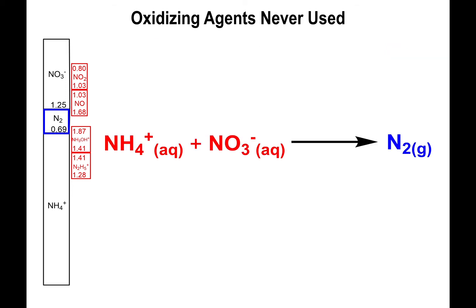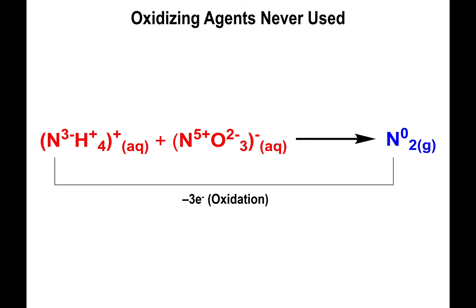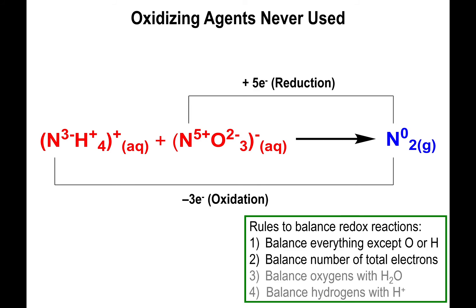We're going to use the same rules as before for these comproportionation reactions. We look at the charges of the individual species. Nitrogen has a three-minus charge in the first reactant and a five-plus charge on the second reactant. Subtracting from zero, that gives minus three electrons for the first and five electrons for the second — and this is per nitrogen center. We have one nitrogen for each reactant, so the fractions multiply by one.